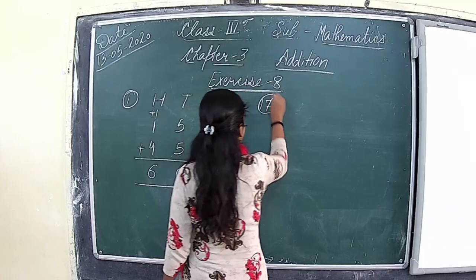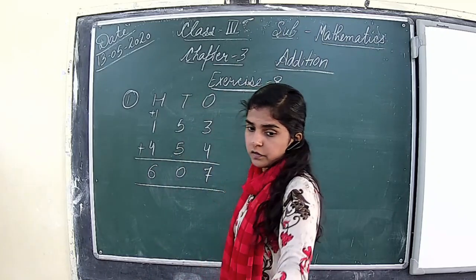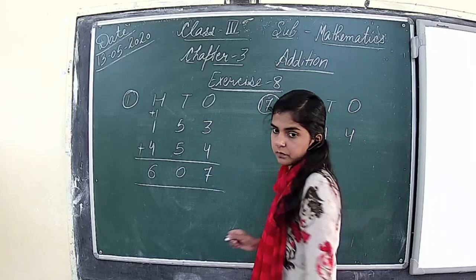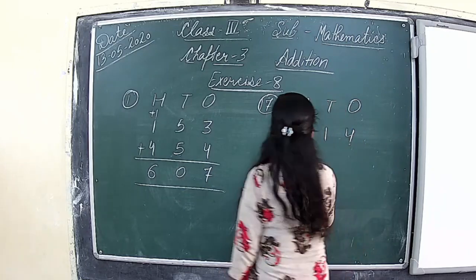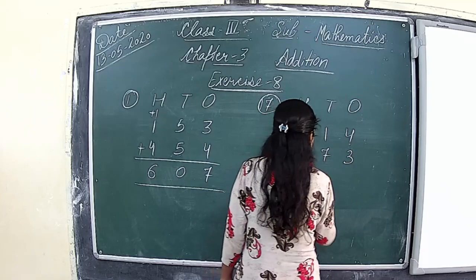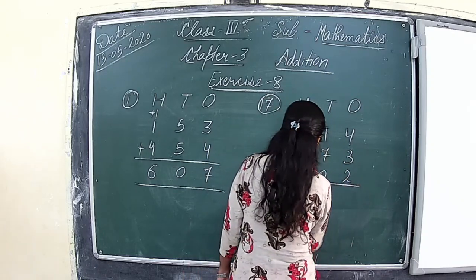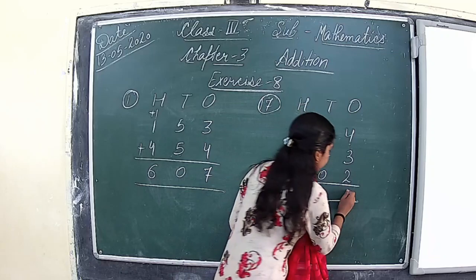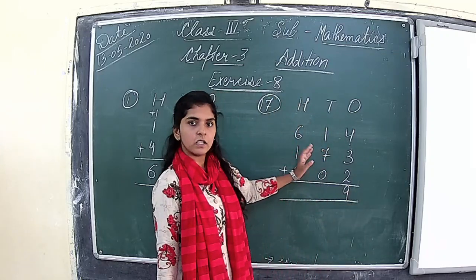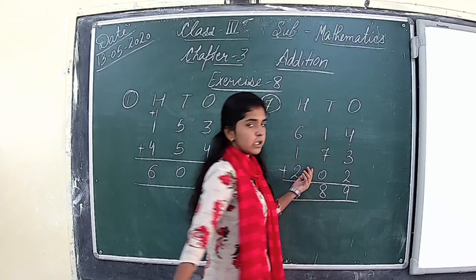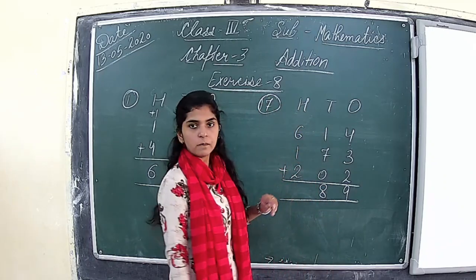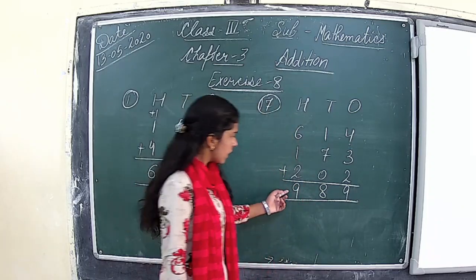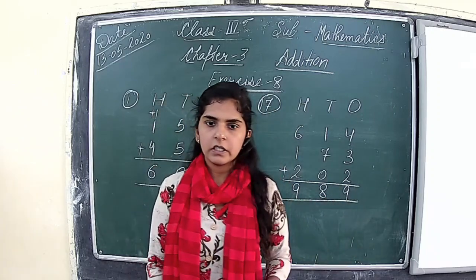Let's see one more question — question number 17: 614, 173, and 202. So let us add these numbers. 4 plus 3 is 7, 7 plus 2 is 9, so we write 9. Then 1 plus 7 is 8, 8 plus 0 is 8, so we write 8. Then 6 plus 1 is 7, 7 plus 2 is 9. So the answer is 989.